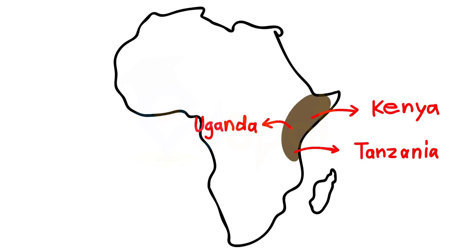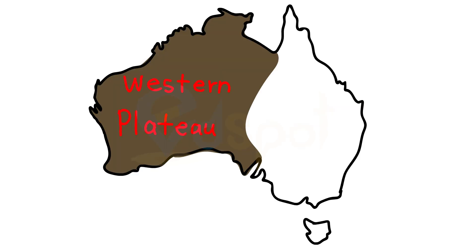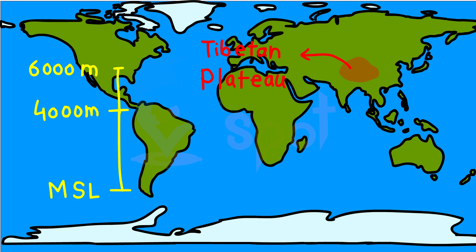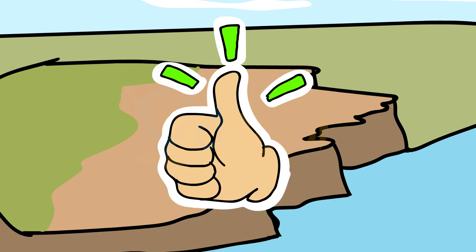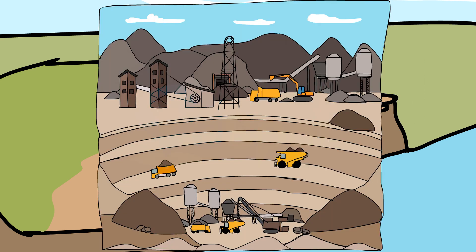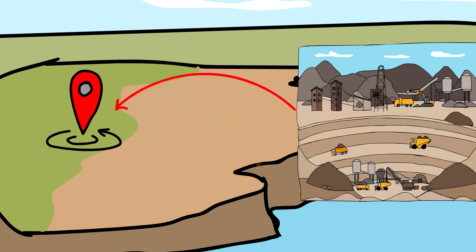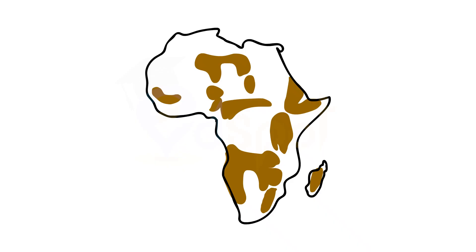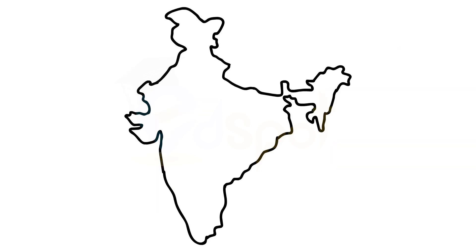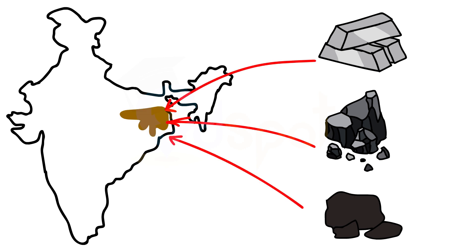Plateaus, like mountains, may be young or old. The Deccan Plateau in India is one of the oldest plateaus. The East African Plateau in Kenya, Tanzania, and Uganda, and the Western Plateau of Australia are other examples. The Tibetan Plateau is the highest plateau in the world, with a height of 4,000 to 6,000 meters above mean sea level. Plateaus are very useful because they are rich in mineral deposits — as a result, many of the mining areas in the world are located in plateau areas. The African Plateau is famous for gold and diamond mining.